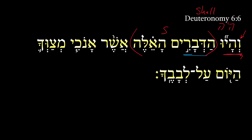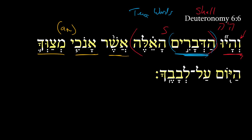Now when we see the word devarim — 'these things' — we shouldn't think only of the 10 words or the 10 things. Remember, the 10 commandments are understood as the 10 words or the 10 devarim. Not just those, but it's all these things that Moses is commanding today. And we get that in the next relative clause: 'which I am commanding.' We have to get 'am' in here as a verbless clause — 'which I am commanding.'